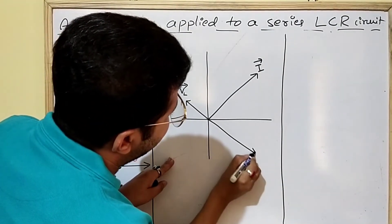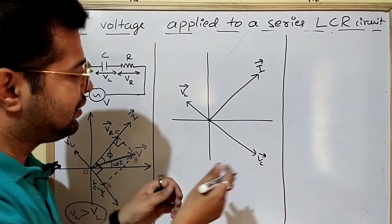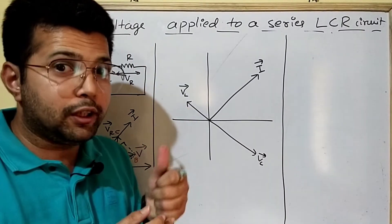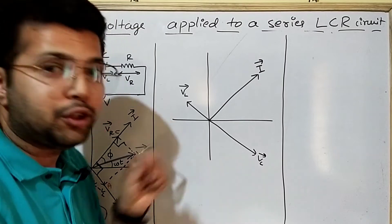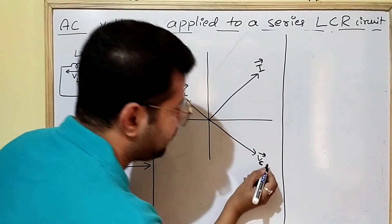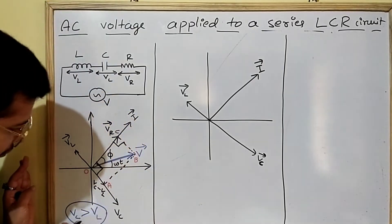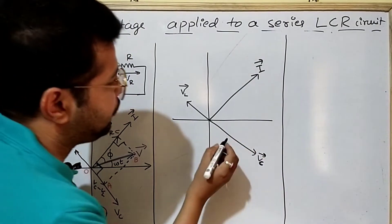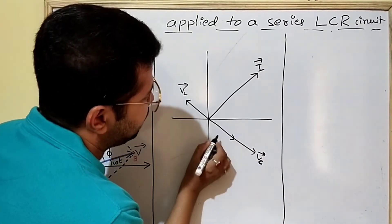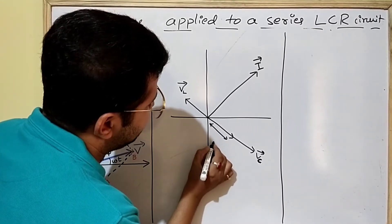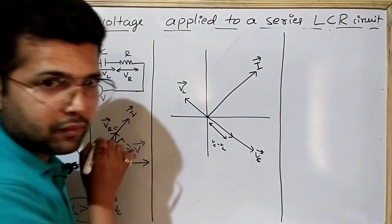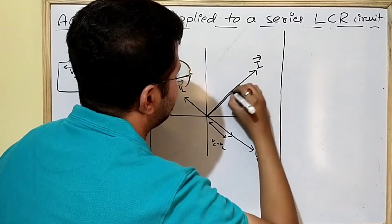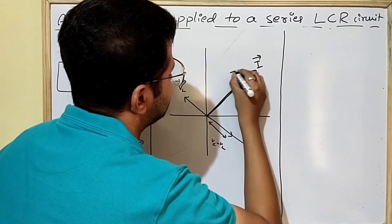As far as voltage across the capacitor is concerned, in the case of a pure capacitive circuit, current leads voltage, so VC voltage should be behind the current. Now we will consider that VC is greater than VL for simplicity. So when you add these two, the resultant will come here, and the length of this resultant is VC minus VL. In the case of a pure resistive circuit, there is no phase difference between voltage and current, so this is the voltage VR.